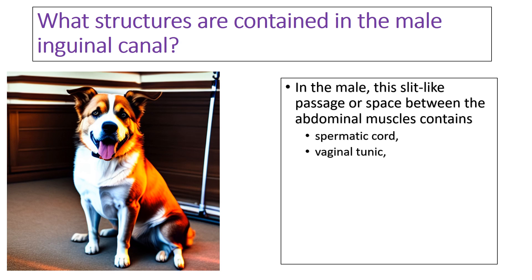Another structure contained within the male inguinal canal is the vaginal tunic, also known as the tunica vaginalis. It is a pouch of serous membrane within the scrotum that lines the testes and the epididymis, consisting of a visceral and a parietal vaginal tunic. Another structure found in the male inguinal canal is the cremaster muscle, the muscle of the spermatic cord, which functions in raising the testes closer to the body — especially when external temperature is low — to ensure spermatogenesis takes place normally.